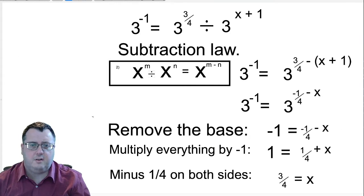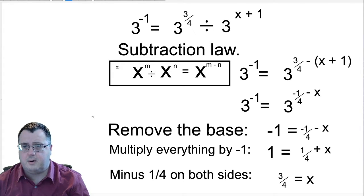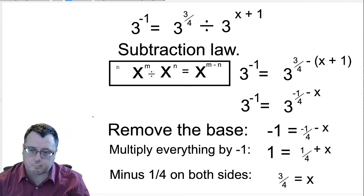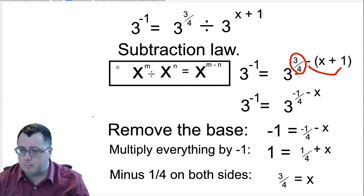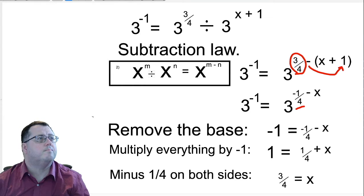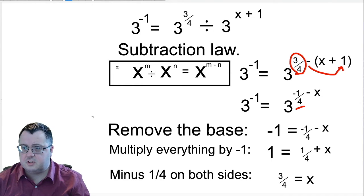3 to the negative 1 is equal to 3 to the 3 quarters divided by 3 to the x plus 1. So if we use the second law, the subtraction law, where we divide the 3s, we're going to subtract the powers, which will give me 3 to the minus 1 is 3 to the 3 quarters minus x plus 1. Working that out, 3 quarters here, subtract 1 is negative 1 quarter. And you're also taking away x, which is this here. Okay, so I've now got 3 to the minus 1 is 3 to the minus 1 quarter minus x.